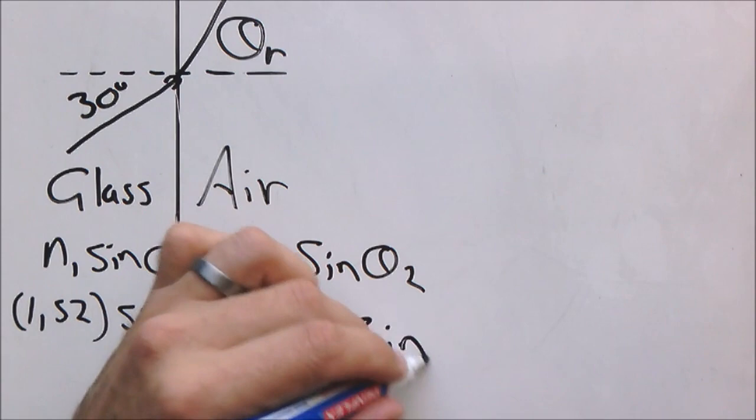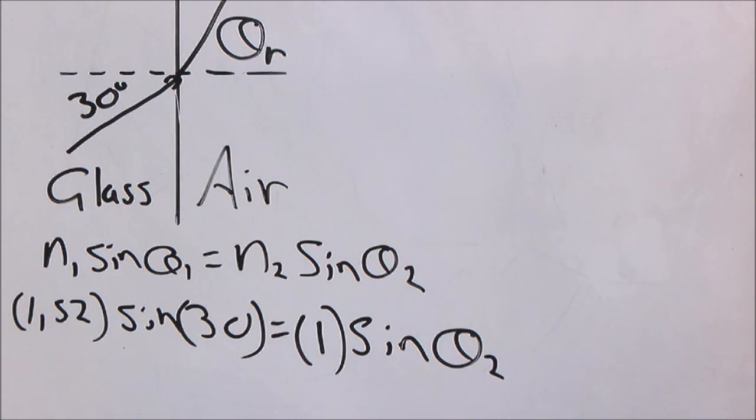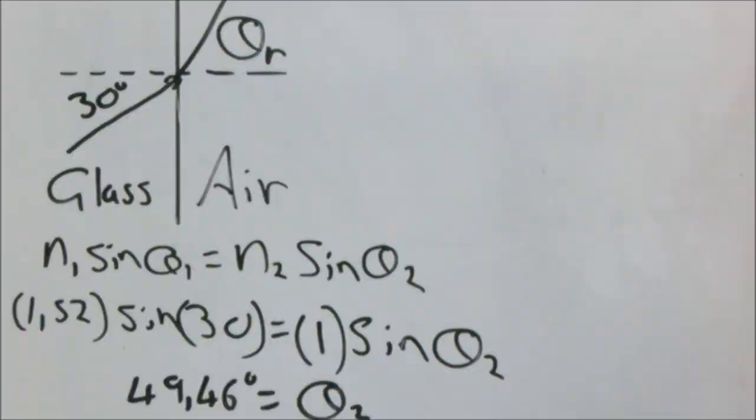So we can do a quick calculation: 1.52 times sine 30 divided by 1, and take the inverse function of that value. You will get sine theta 2 as 49.46 degrees.